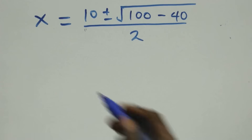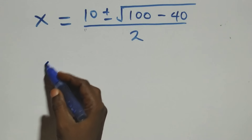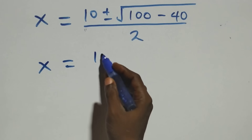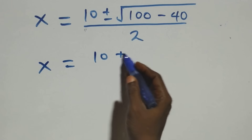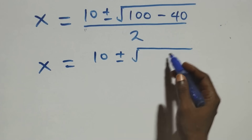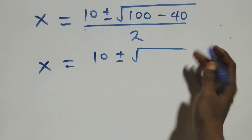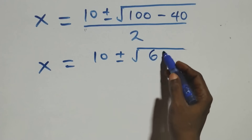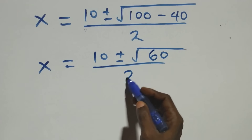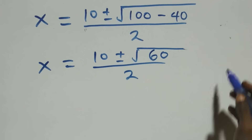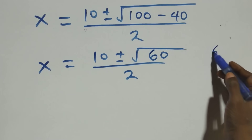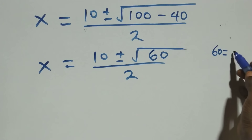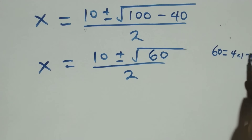This becomes x equals to ten plus or minus square root of sixty, all over two. We can also express sixty as four times fifteen.